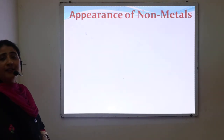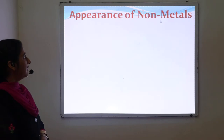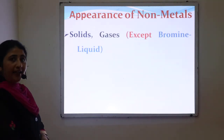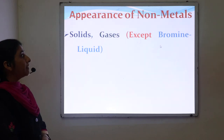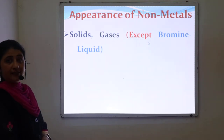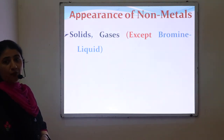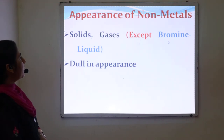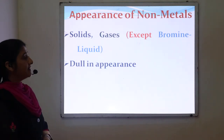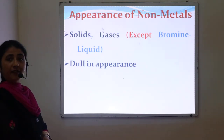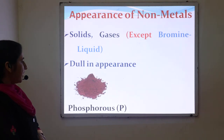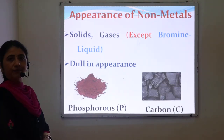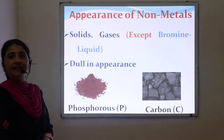The next is appearance of non-metals. Non-metals are generally solid and gaseous, except bromine which exists in a liquid state. Non-metals are dull in appearance instead of shining. For example, phosphorus and coal that mainly contains carbon.